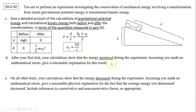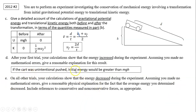After your first trial, your calculation showed that energy increased during the experiment. Assuming no mathematical errors, give a reasonable explanation. One reason could be that you did not actually release the card from rest — it's pretty hard to do mechanically, and your hand may have pushed a little. An unintentional push would result in greater initial energy than mgh, causing the measured energy to increase.